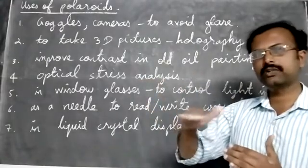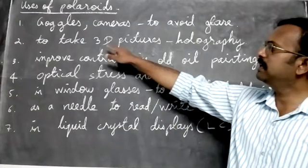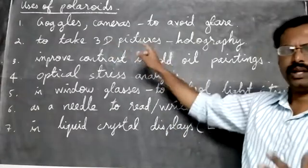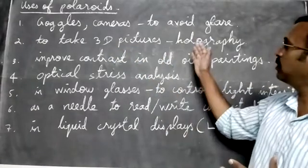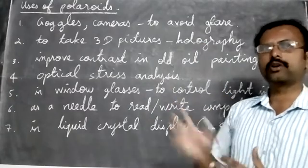Next one is to take 3D pictures. We can take 3D images of pictures - that's called holography. To take the 3D photos, we'll use these polaroids.